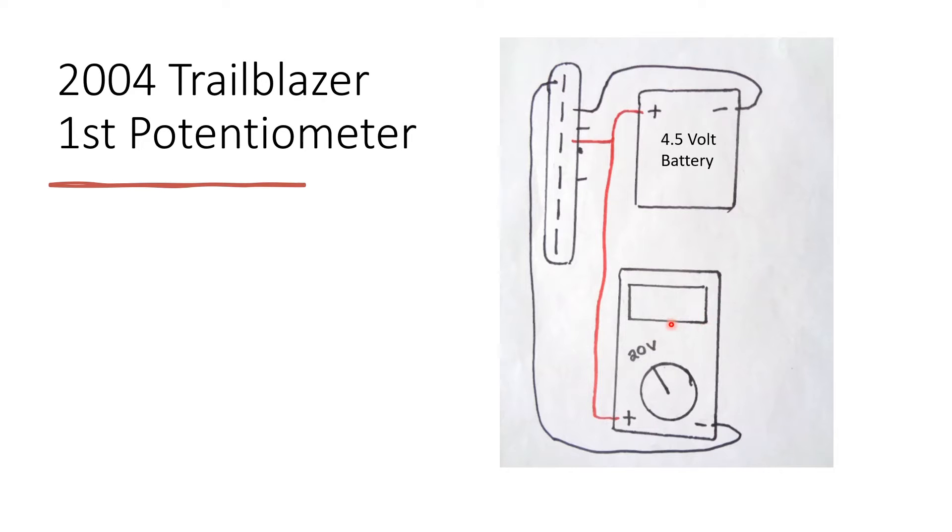After setting up the power supply you're going to be setting your multimeter to 20 volts. You're going to connect the negative from the multimeter to this first pin. The negative from the battery should connect up to the second pin and then the positive from both the battery and the multimeter will connect up to this third pin.